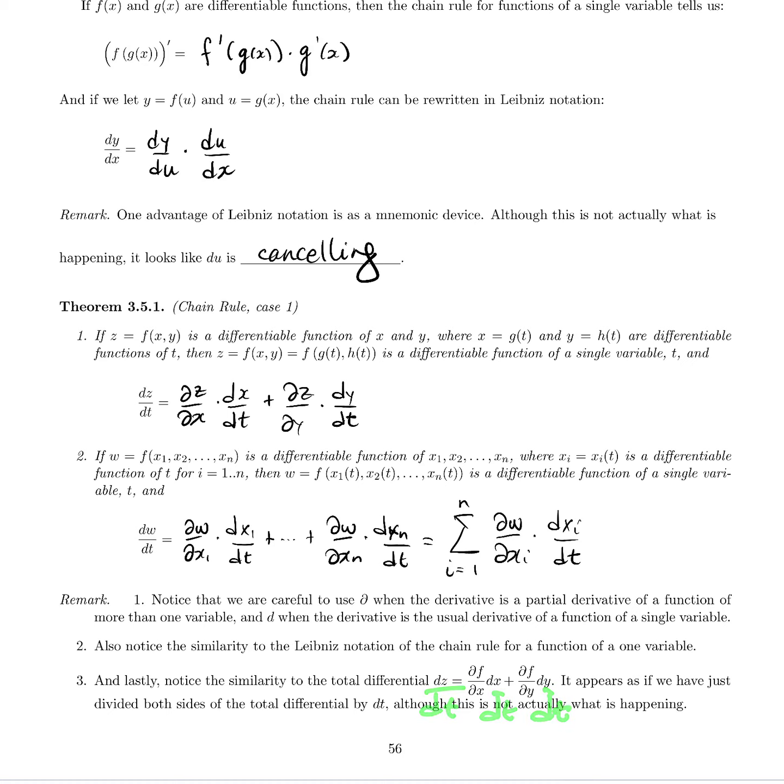Now that is not at all what's happening, but yet again as a little memory aid, if you remember the total differential, it's easy to remember the chain rule in this case where the intermediate variables are functions of a single variable. It's easy to remember because it looks like you're taking the total differential and just dividing by dt. Although this is not what's happening. That is not a proof. We're not actually going to prove the chain rule. We will just take that as given.